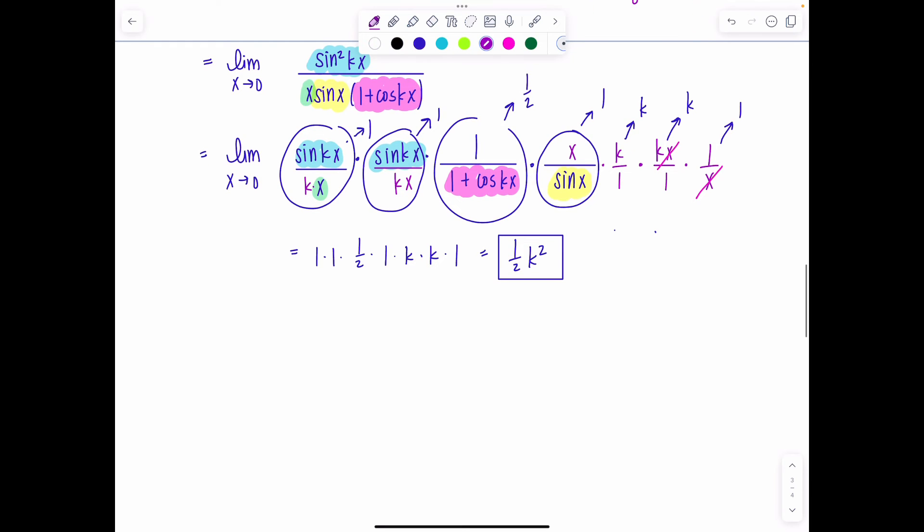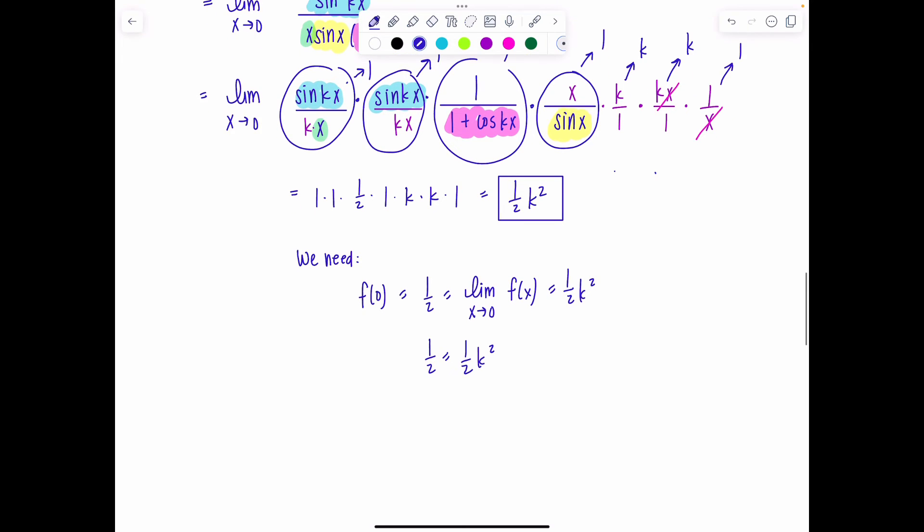So I need to set (1/2)k² equal to 1/2 in order for the function to be continuous and for condition three to be satisfied. To bring this problem on home, we need f(0), which is 1/2, to equal the limit as x approaches 0 of f(x), which was (1/2)k². So 1/2 equals (1/2)k². That means k² equals 1. So k can be plus or minus one.